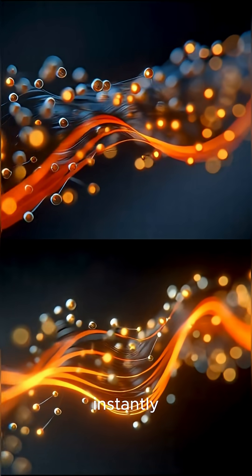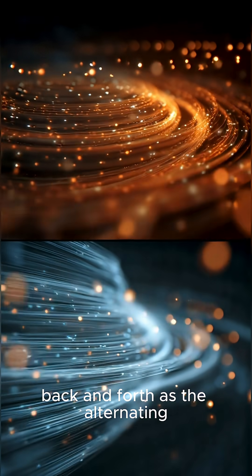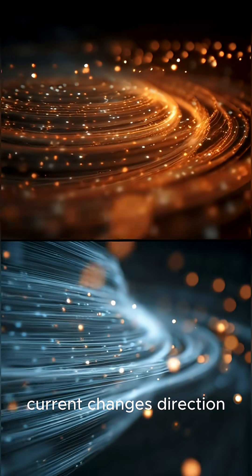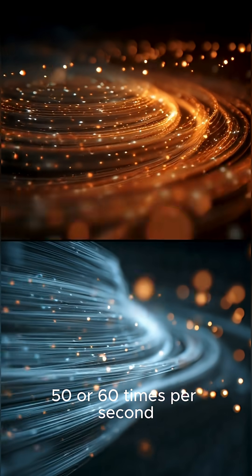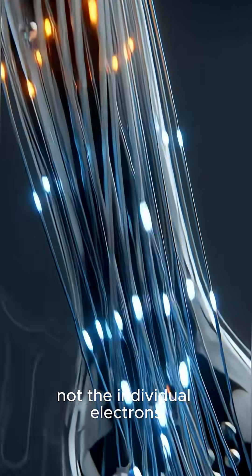Even though your bulb lights up instantly, the electrons barely move. They just jiggle back and forth as the alternating current changes direction 50 or 60 times per second. It's the energy that reaches the bulb quickly, not the individual electrons.